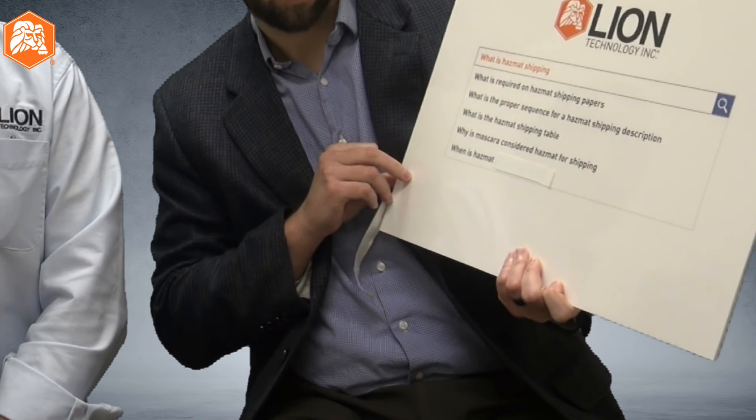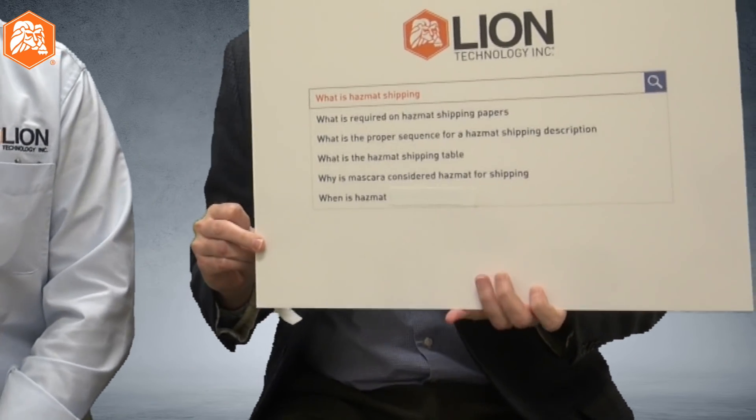Why is mascara considered HAZMAT for shipping? That's an oddly specific question. The general answer is that mascara is a flammable solid — that's why it's considered a HAZMAT for shipping. But it also brings home the point that hazardous materials aren't necessarily bad materials; they're things we need for our way of life and industry, and they can be something as innocuous as mascara. But if you're shipping a drum of it, it is a flammable solid, and therefore we need to regulate it and handle it in a thoughtful manner.